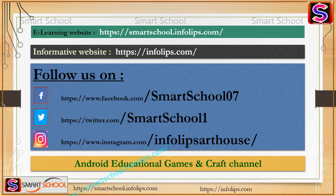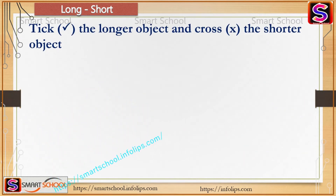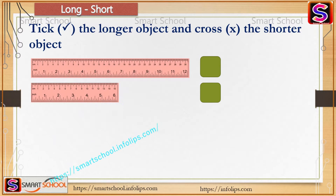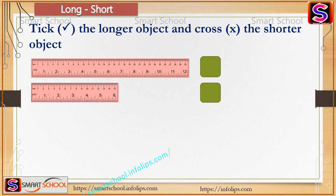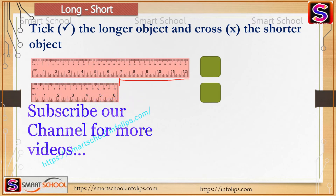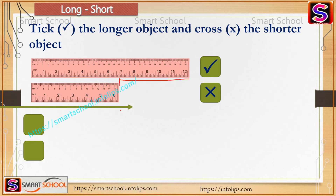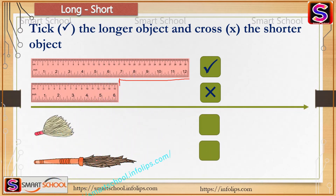Let's continue. Tick the longer object and cross the shorter object. First we will see these two rulers — can you tell me which is longer and which is shorter? The first one is longer and the second one is shorter, because the first ruler's length is more than the second ruler.